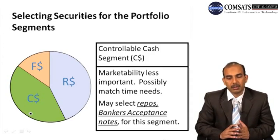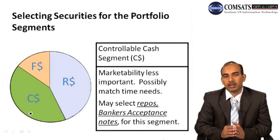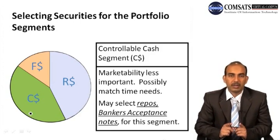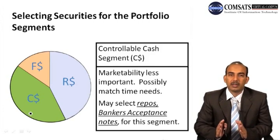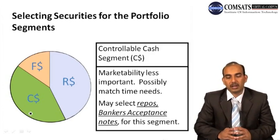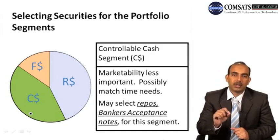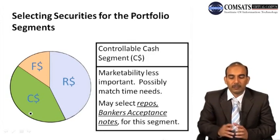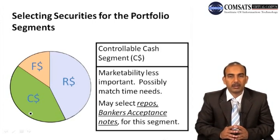For example, if after one month the firm has a requirement to have one million rupees at its disposal, the firm should be able to realize one million rupees after one month by selling securities — or the firm could invest in securities whose maturity is about one month. This way the firm controls its cash and earns something on it during that period. Instead of idle cash, the firm earns when it purchases securities. Suitable securities for the controllable cash segment are repurchase agreements and banker's acceptance notes.